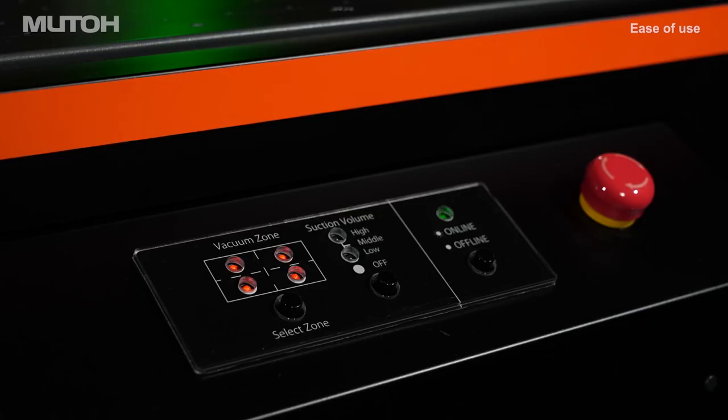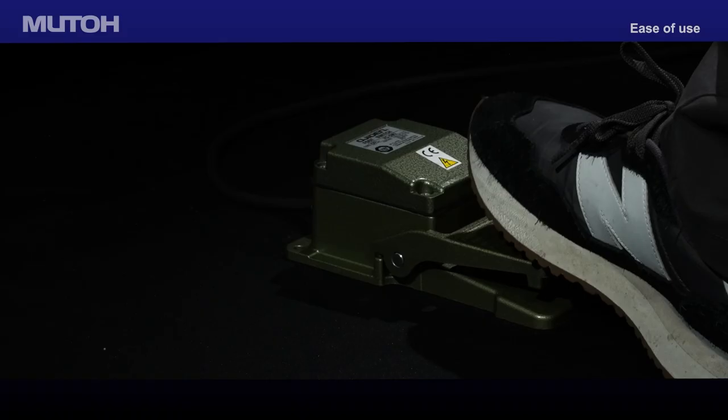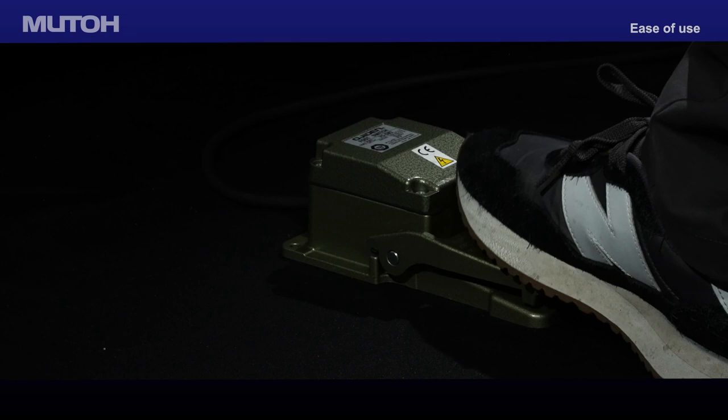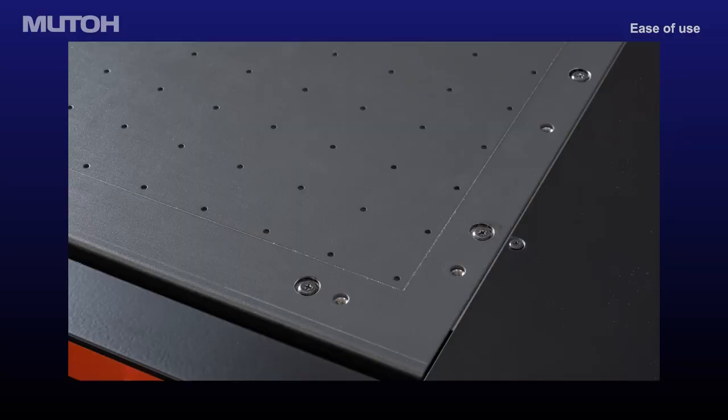Switching between vacuum zones and variable suction pressure can easily be selected from a dedicated control panel on the front of the printer. The vacuum suction can also be engaged or disengaged quickly by tapping the foot switch. Suction holes and pre-drilled holes outside the printable area can be used to secure custom jigs.